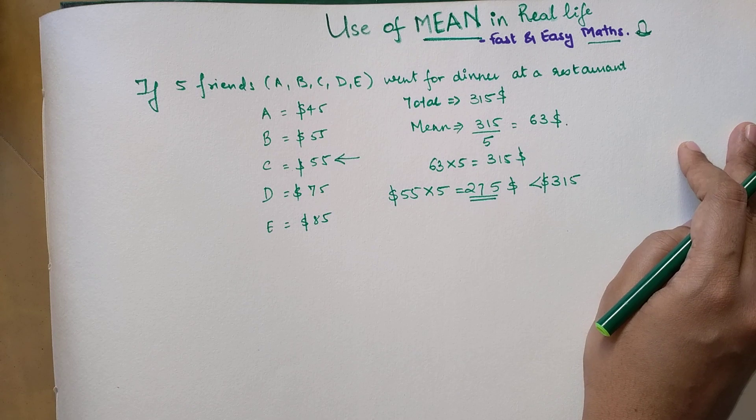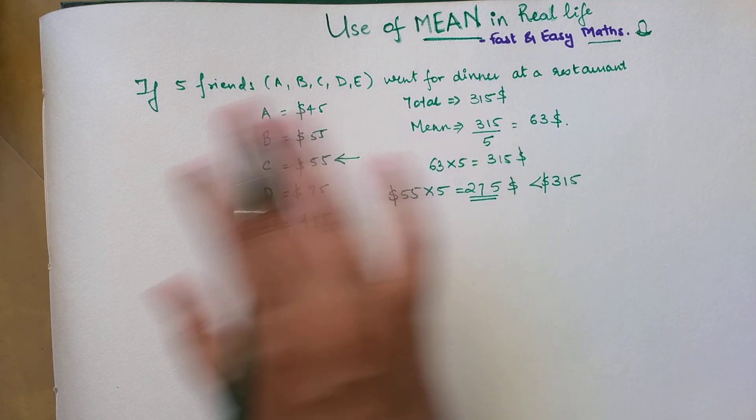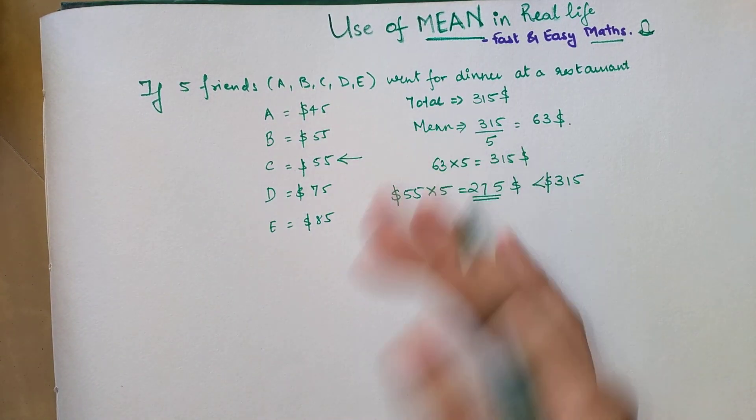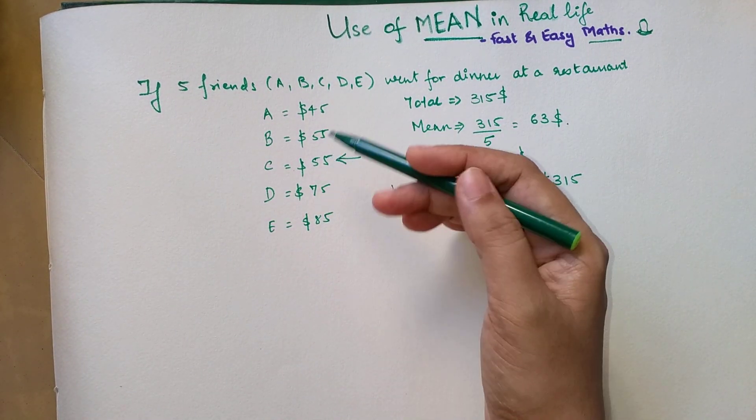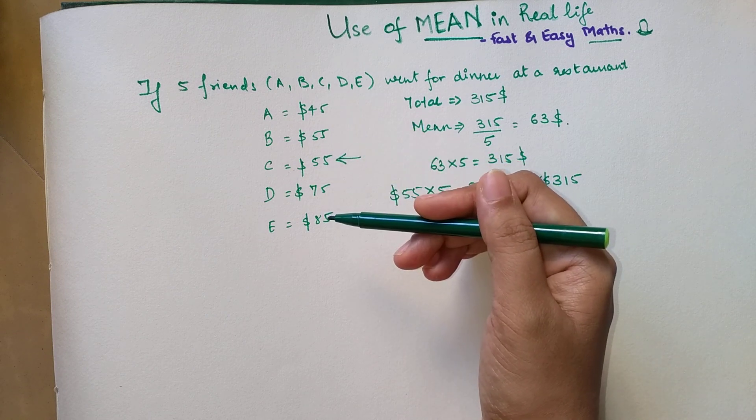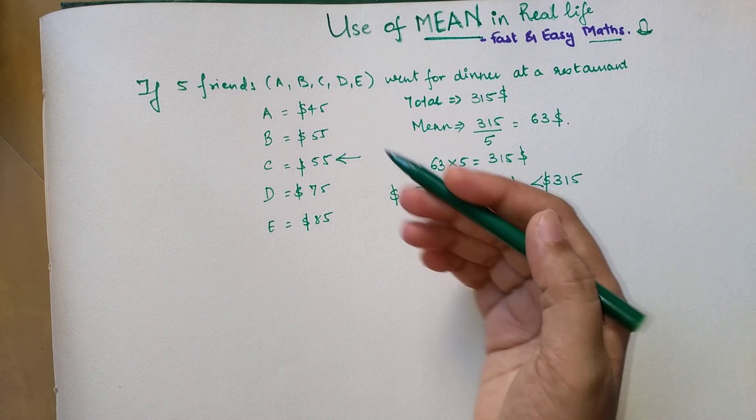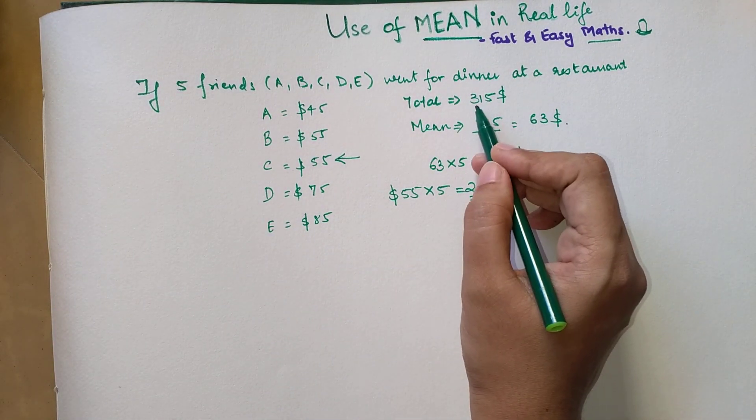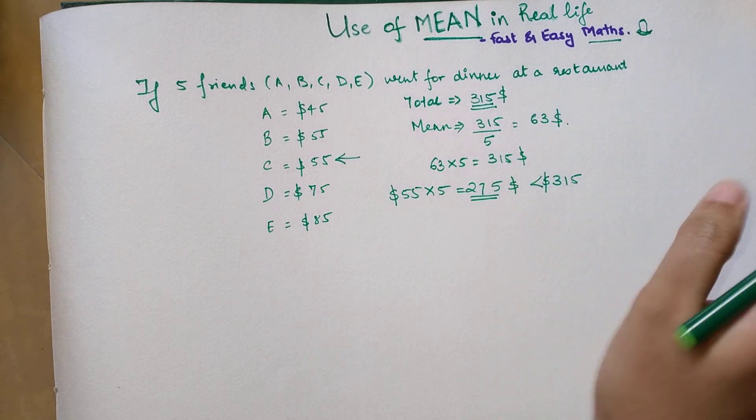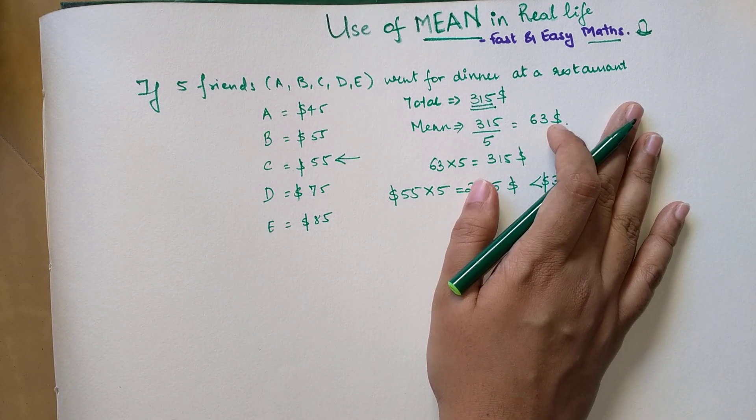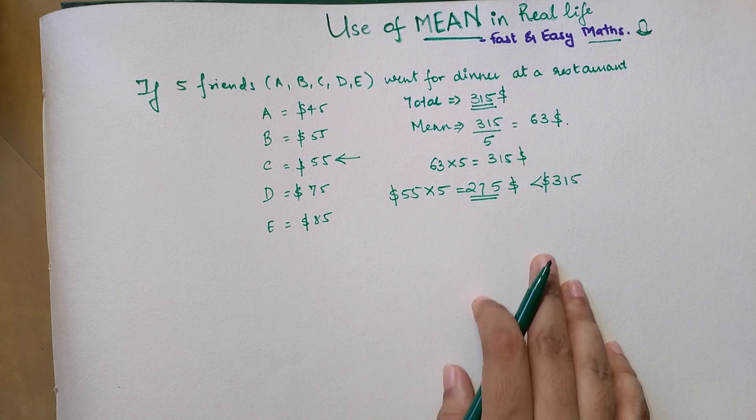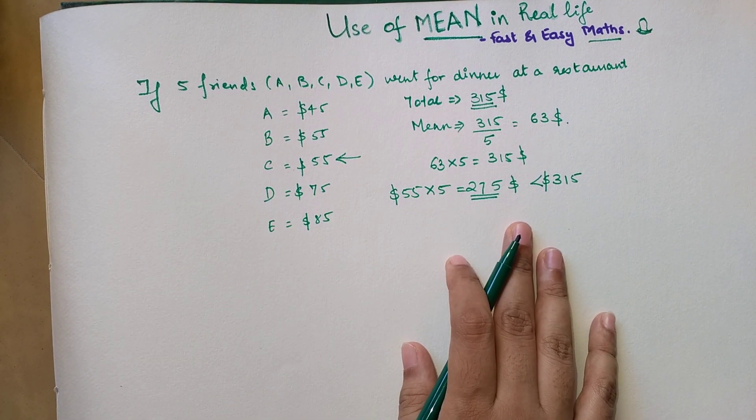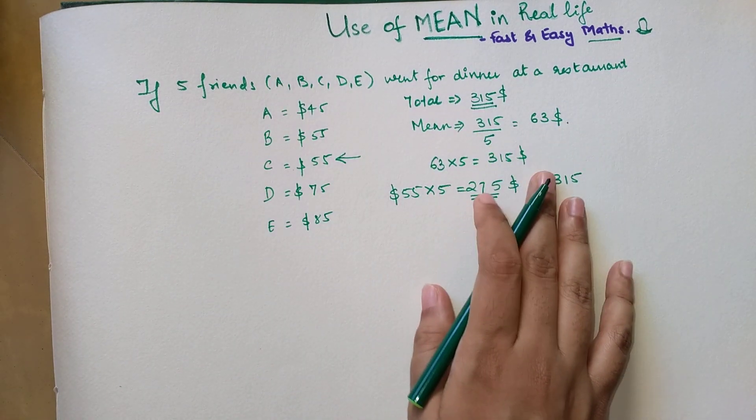I hope this particular scenario is very clear. Now let's come to mode. The mode of this particular data set would have been again $55. So if they had taken mode also, your total bill amount of $315 would not have got covered. So basically you realize that in these kinds of scenarios, you won't be able to do any other operation except for mean.